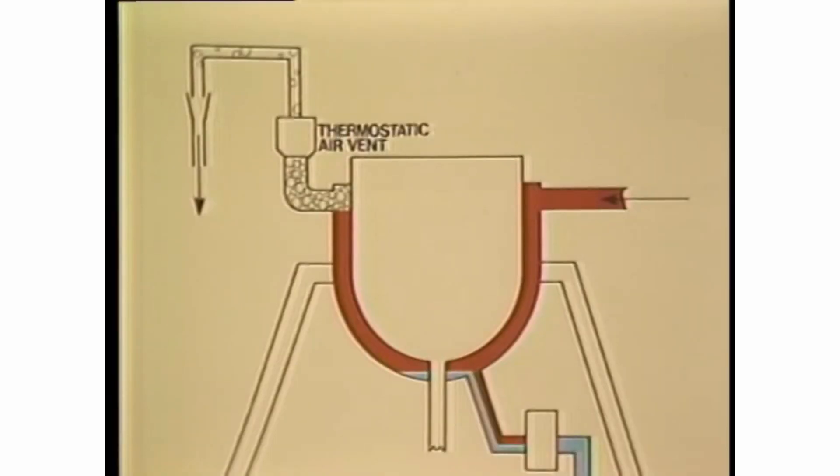Install thermostatic air vents at the top of the heat exchanger's steam space and as far from the steam inlet as possible. Air vents are typically used on jacketed kettles, retorts, vulcanizers, jacketed sterilizers, and most batch process equipment.